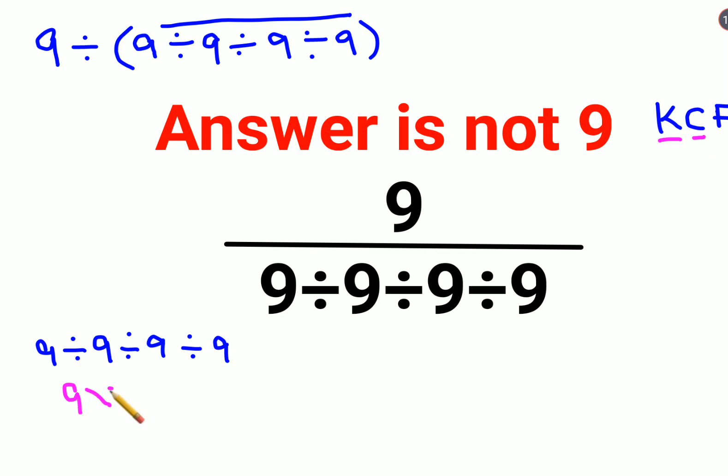And F stands for flipping. So we are changing the division sign to multiplication, so we will flip or take reciprocal of 9 which is 1 upon 9, similarly over here.